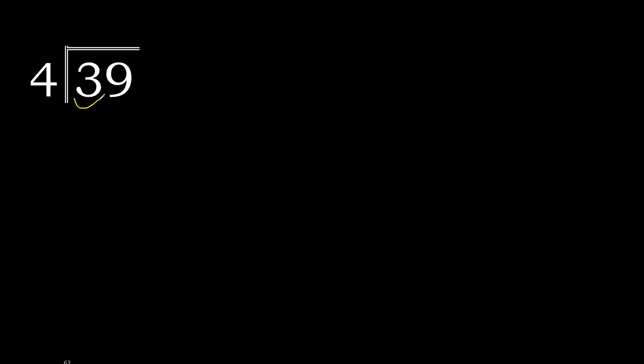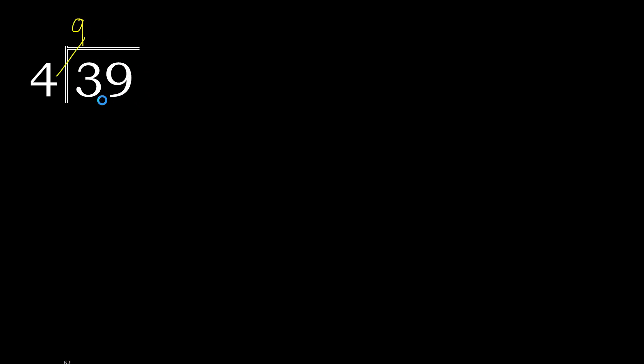39 divided by 4. 3 is less, therefore move to the next: 39. 39 is not less. With 39, find which number 4 multiplied by is nearest to 39 but not greater — 4 multiplied by 9 is 36.